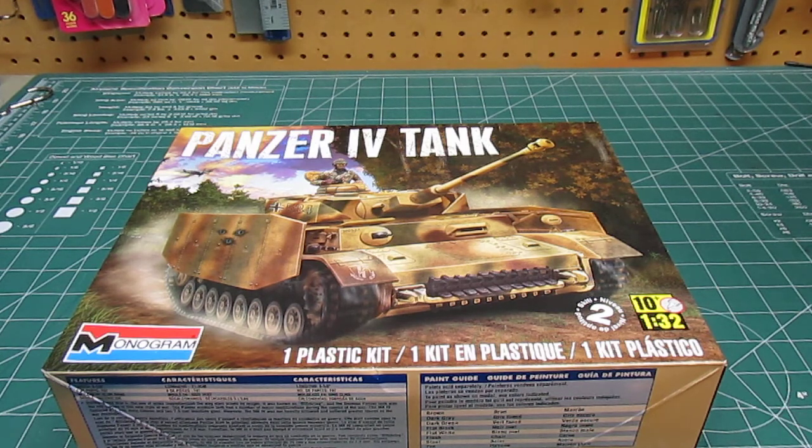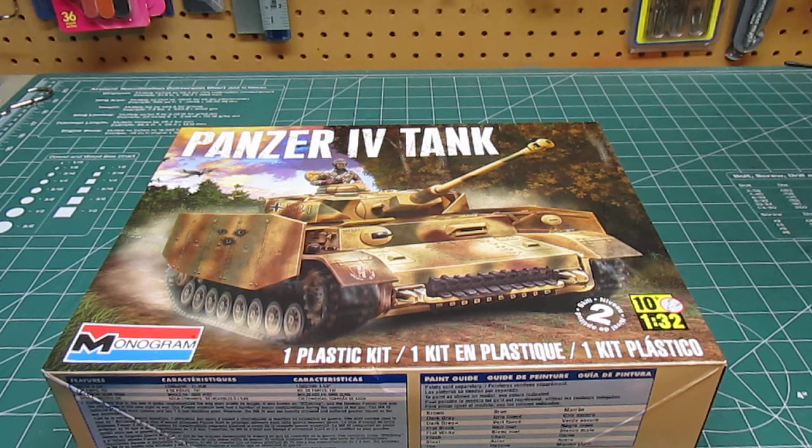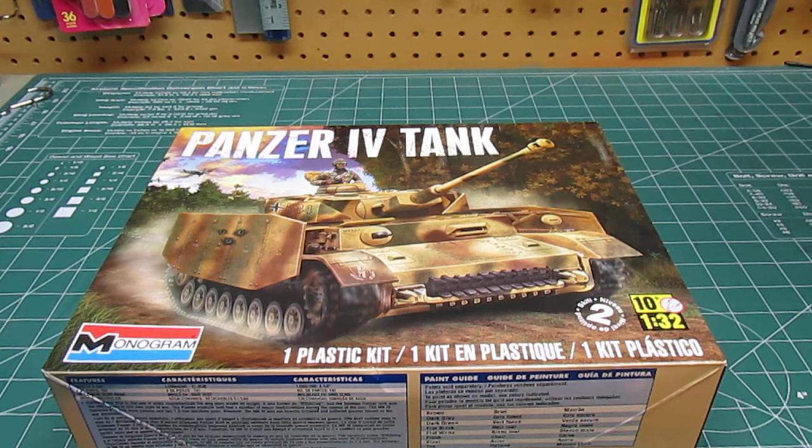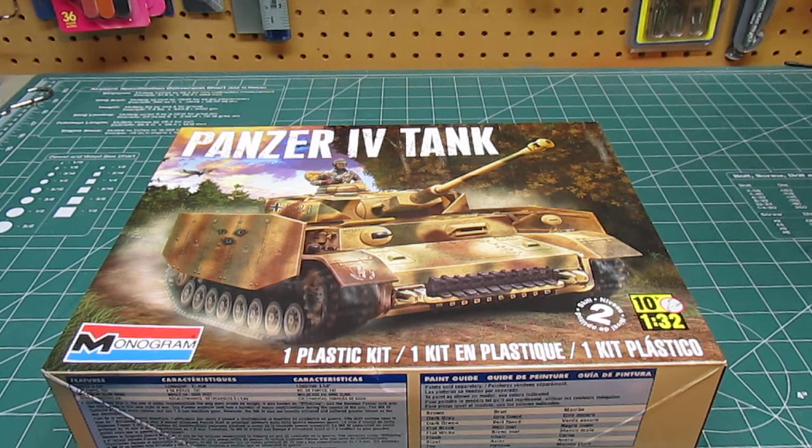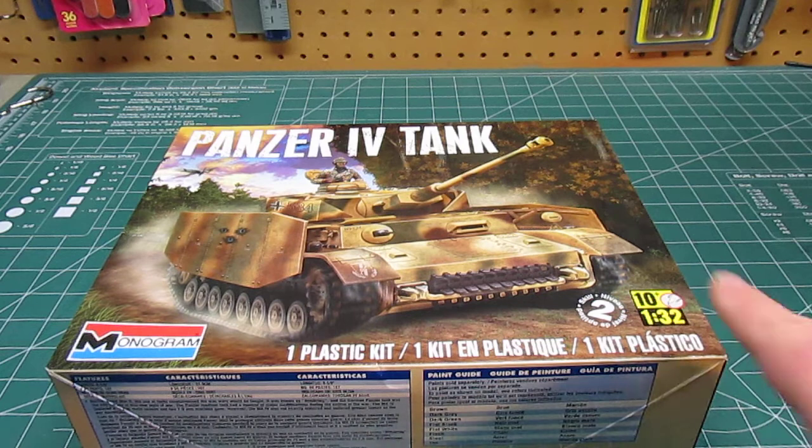As you can see, it is standard Monogram packaging. It's an attractive actual look of a built model with a little bit of creative painting and Photoshop around it. They do give you some details on it. It is 197 pieces, 8 and 5/8 inches long, and it's molded all in olive drab and does come with decals. This is in 1/32nd scale, which is a little bit bigger than the standard 1/35th scale.